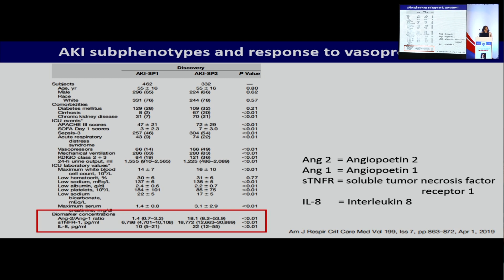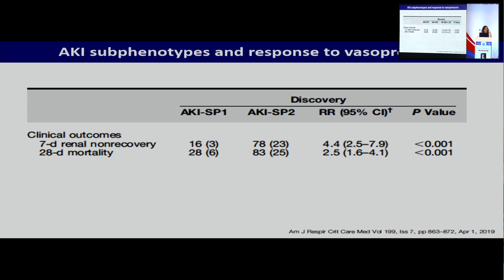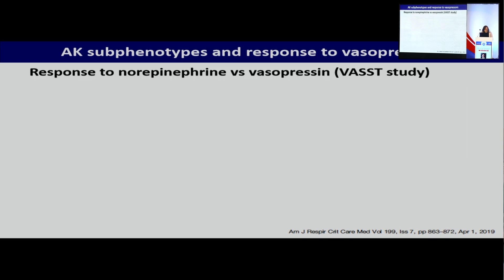These two sub-phenotypes looked different and also had a different prognosis. Patients with sub-phenotype 2 had a much worse prognosis, a much higher risk of dying, and a much higher risk of not recovering kidney function. The team then applied the same biomarkers and characteristics to a different database — the VASST database, which is a randomized controlled trial looking at the role of vasopressin in patients with sepsis versus noradrenaline.